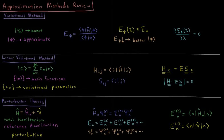This video is a review of the approximations method chapter in the quantum chemistry and spectroscopy playlist. These are all methods that we can use whenever we can't solve the Schrodinger equation exactly. And the first one is the variational method.